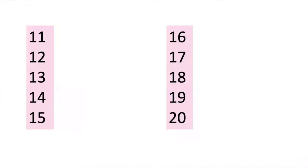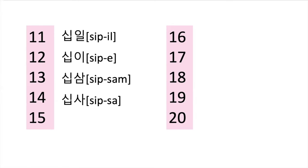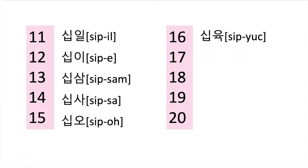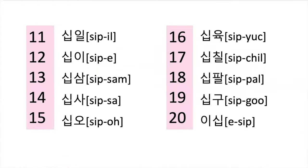And let's count from 11 to 20. So 10 was ship. 11 is ship, and then you say one. So 20 is ship.